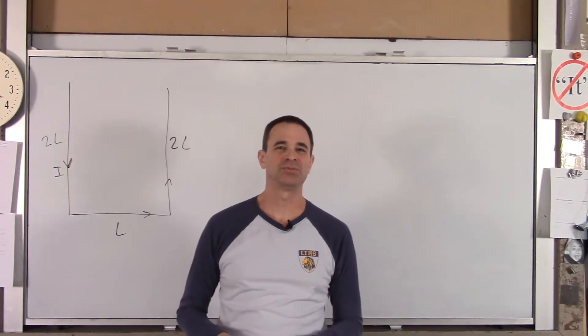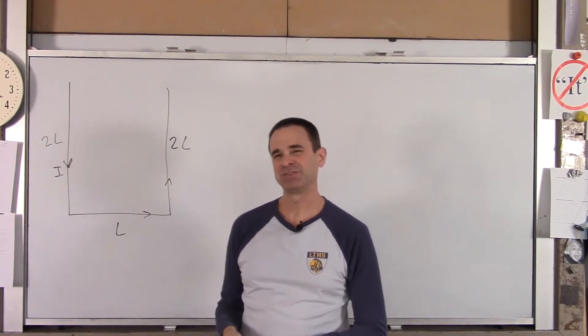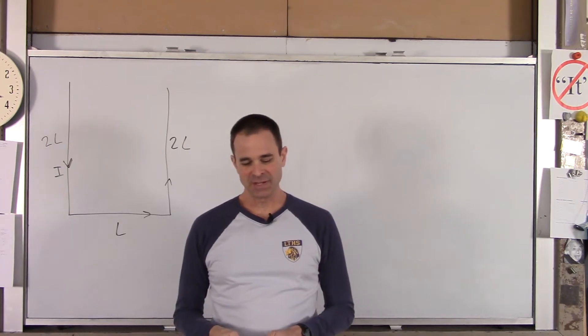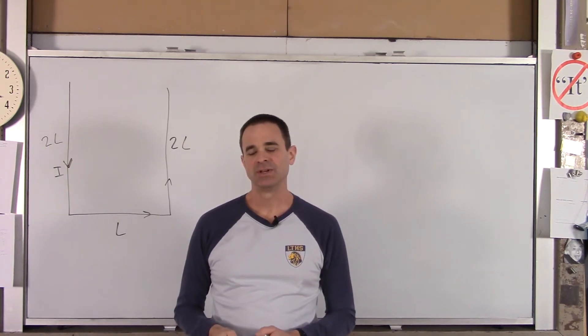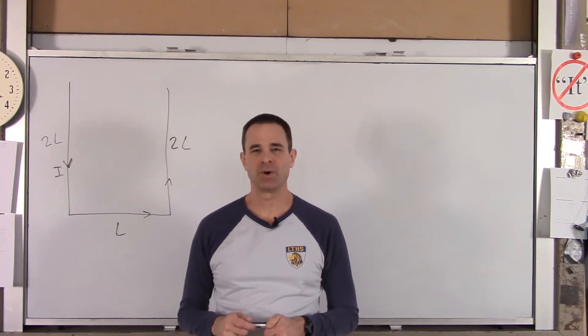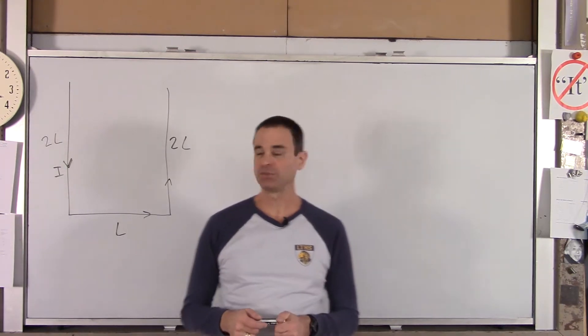Welcome to Lyons Township High School Physics. Today we have an example involving the magnetic field that goes around a current carrying wire. And we're going to bend the wire into a horseshoe.